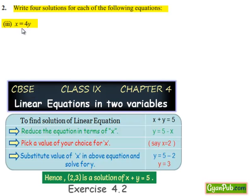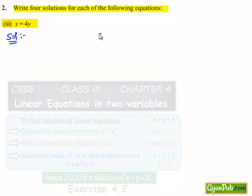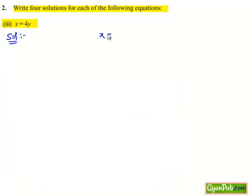Let's see the third bit: x equals to 4y. Moving on to the solution. In the question, the given equation is x equals to 4y, which is a linear equation in two variables x and y. And we need to find four solutions for this equation.